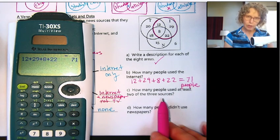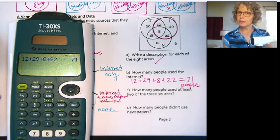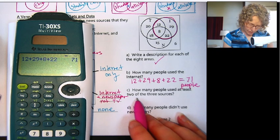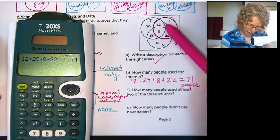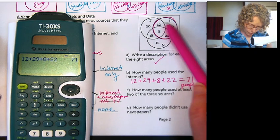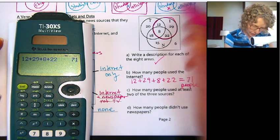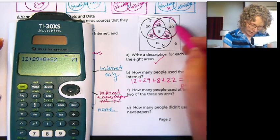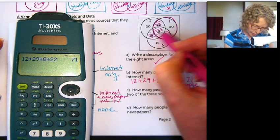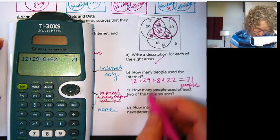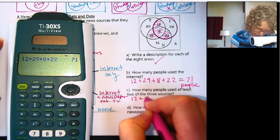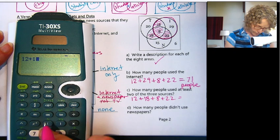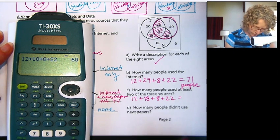How many people used at least two of the three sources? At least two would be in the overlap regions — this person used two, this person used two, this person used two. And at least two would also include people who used all three. So we have four numbers to add up: 12 plus 18 plus 8 plus 22. That gives 60 people.